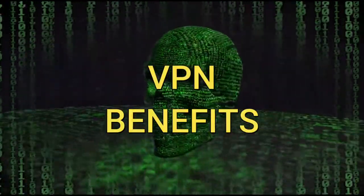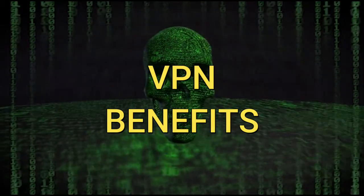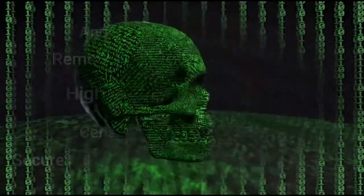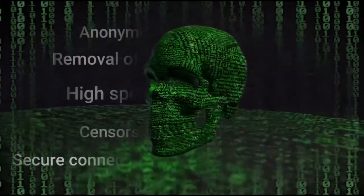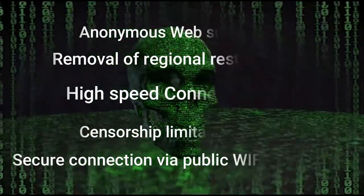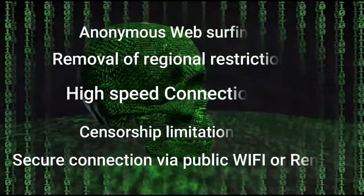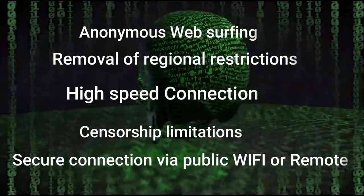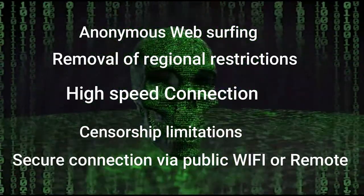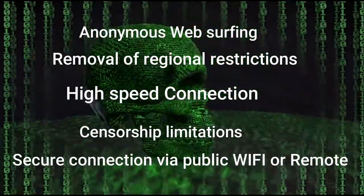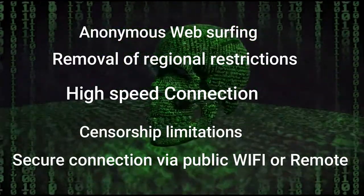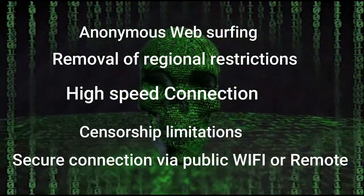VPN has its own benefits as well. First, a VPN allows anonymous web surfing — it hides your real IP address so you can browse websites privately. Second, a VPN removes regional restrictions, since VPN servers are located across the globe so you can overcome regional limitations and access any website, such as Netflix or Amazon Music. Third, VPN keeps a high-speed connection — because Tor is really slow, using a specific VPN server to connect to your desired destination is much faster than connecting through several Tor nodes.